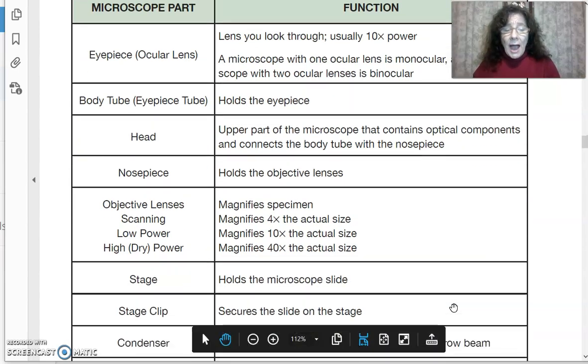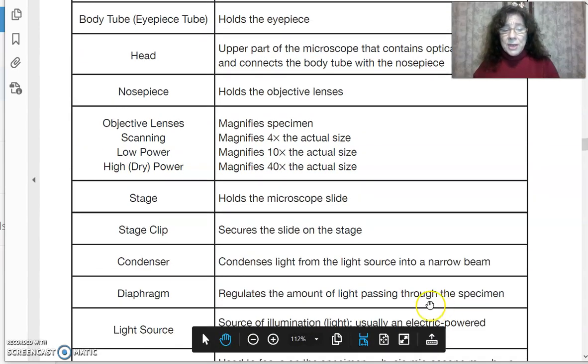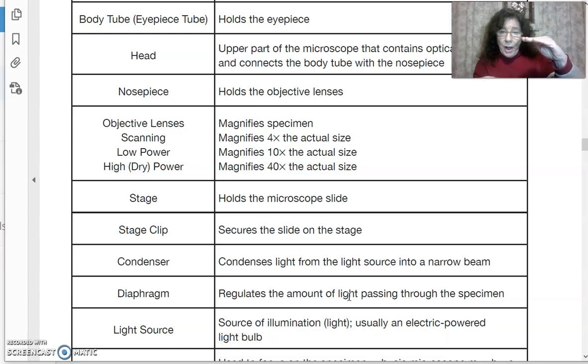I wanted to point out that you have the diaphragm that regulates the amount of light passing through the specimen. Your compound light source is beneath. It goes through your diaphragm up to your stage. In this microscope they do something a little different.